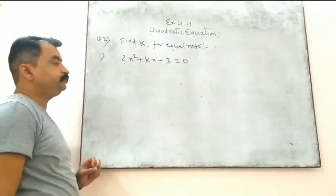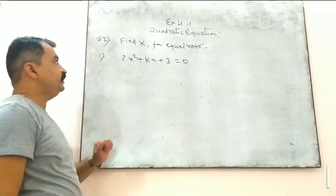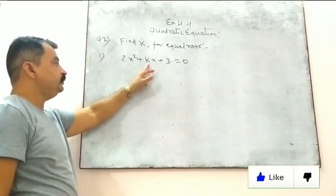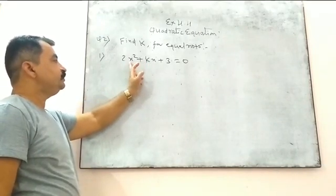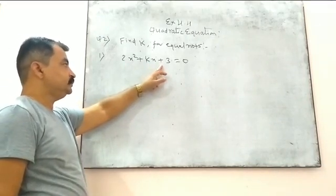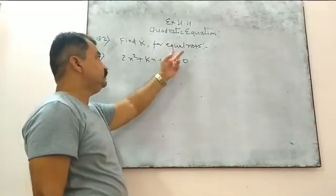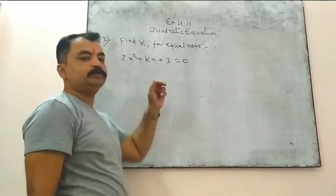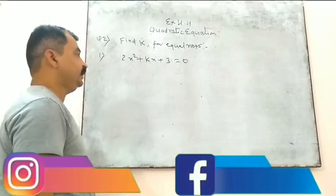The second question: we have to find the unknown value K, which is used in the given quadratic equation for the given condition of equal roots for this equation.